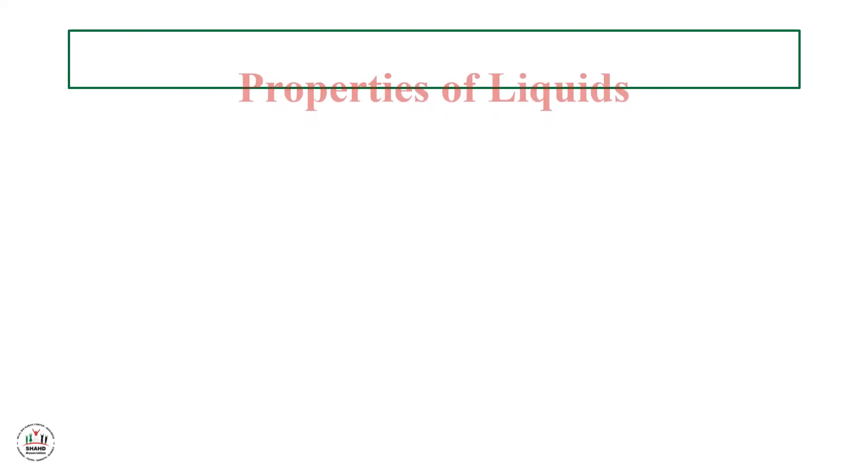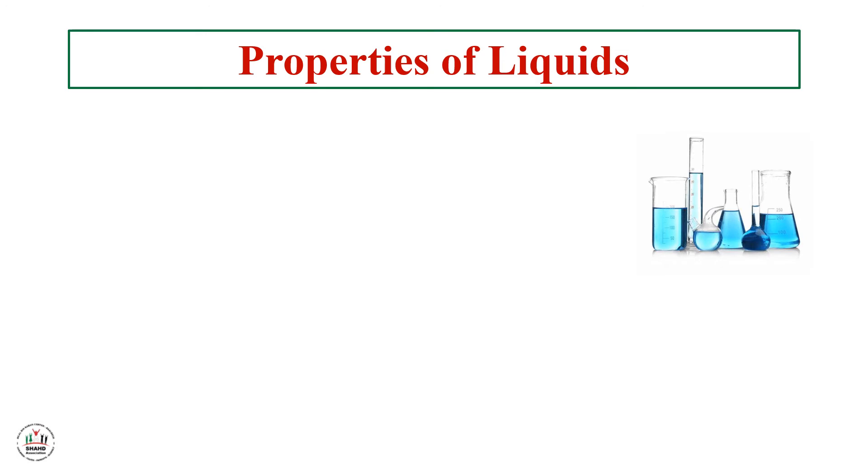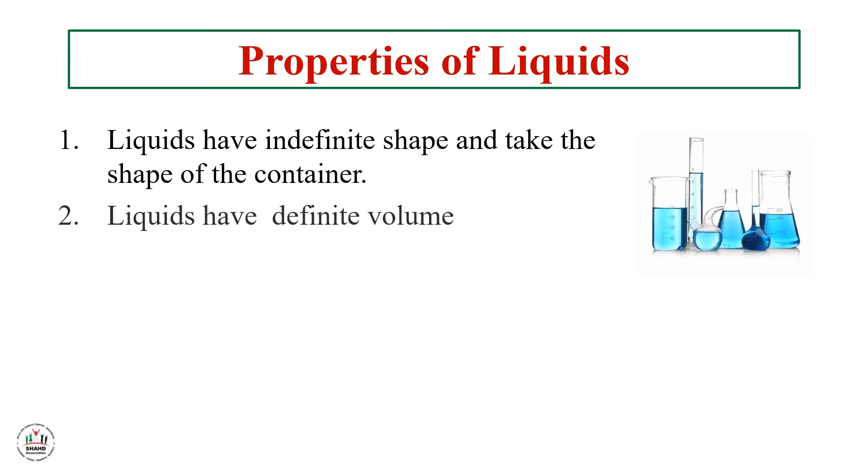We will talk about properties of liquids. We have here different containers. What property can we conclude? Liquids have indefinite shape and take the shape of the container. Second, liquids have definite volume. These five milliliters, if placed in a round or square container, will keep the same volume. So liquids have indefinite shape and definite volume.